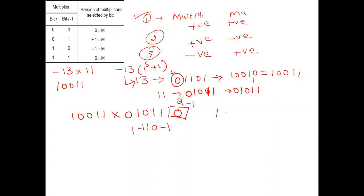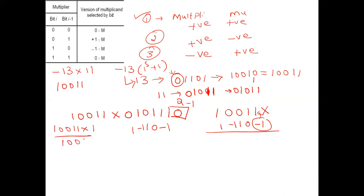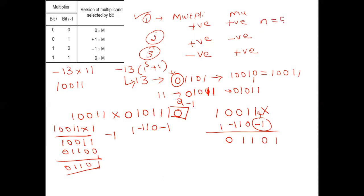The multiplication process: 1 0 0 1 1 multiplied with the recoded values. The first entry is minus 1, so multiplying 1 0 0 1 1 by minus 1 means taking the one's complement and adding 1 to the LSB. One's complement of 1 0 0 1 1 is 0 1 1 0 0, and adding 1 gives 0 1 1 0 1. So if you multiply minus 1 with this, your answer is 0 1 1 0 1.